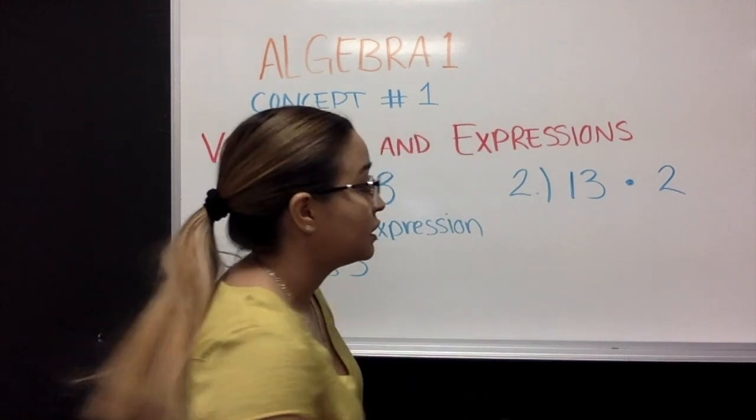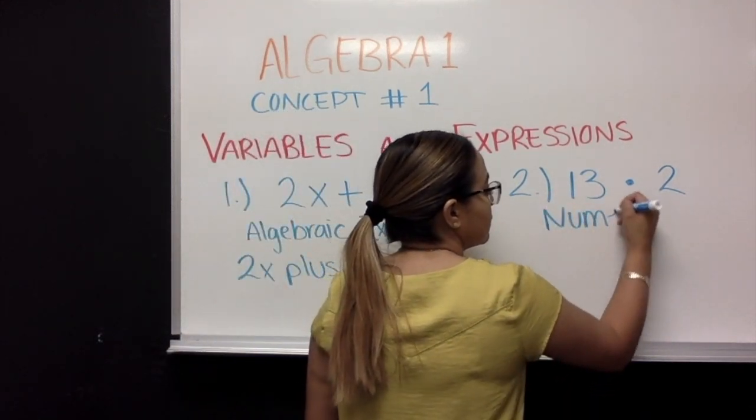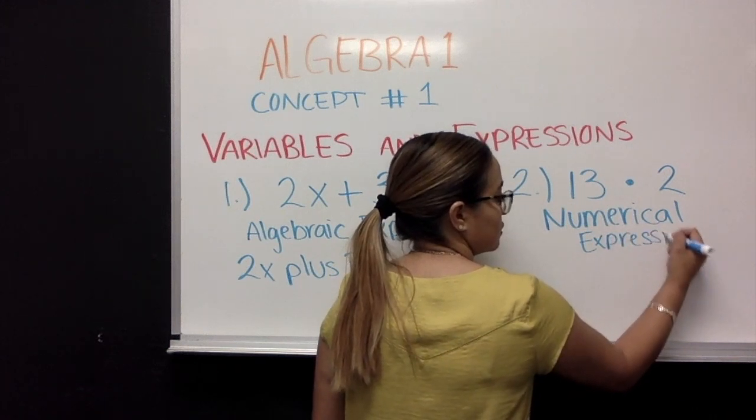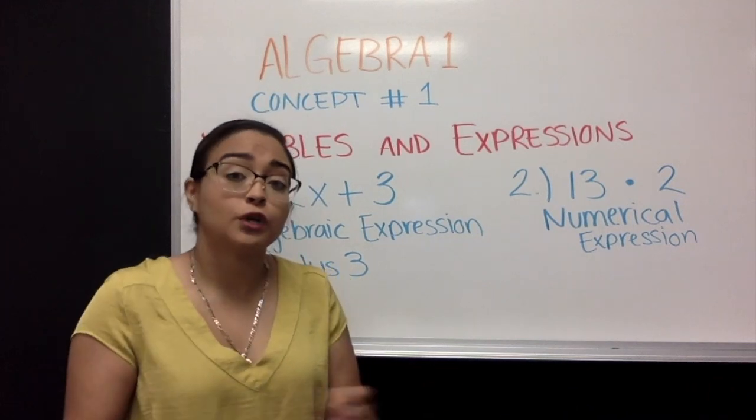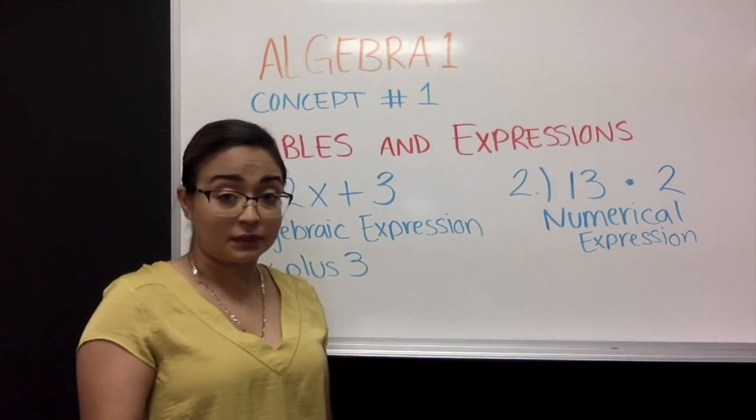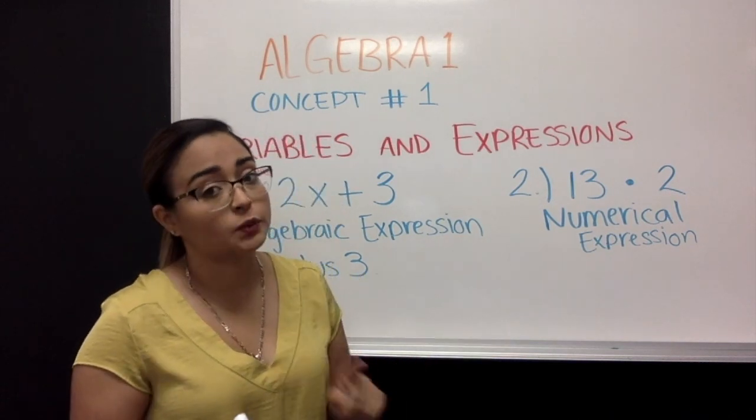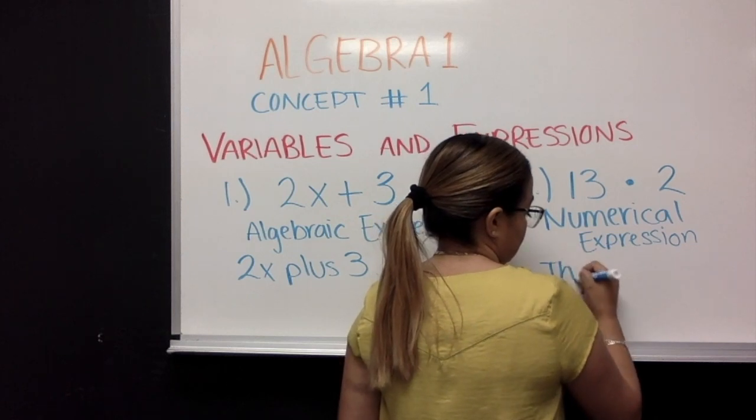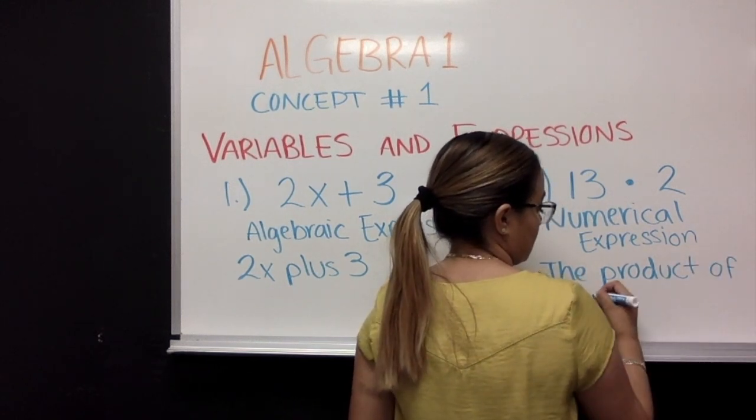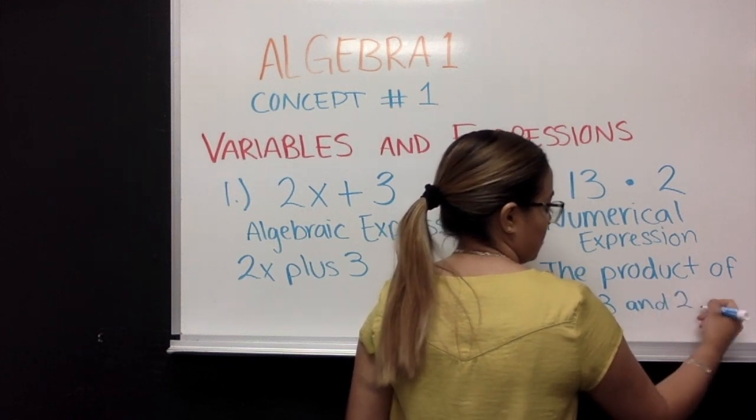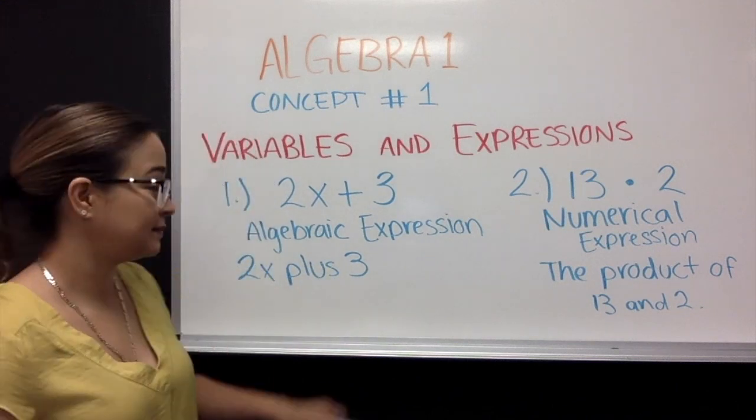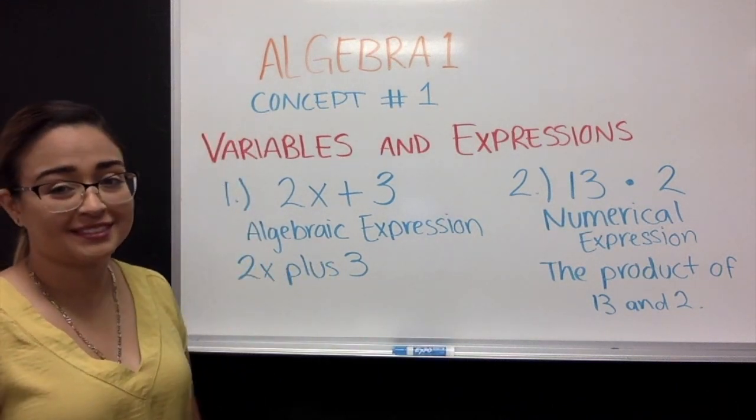Therefore, it is a numerical expression. So, we're going to label it as a numerical expression. Multiplication. And we're going to write it in word form or a phrase. So, another word that refers to multiplication is product. The product of 13 and 2. Very important. Make sure you have everything down.